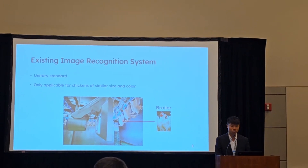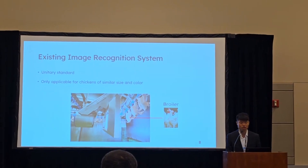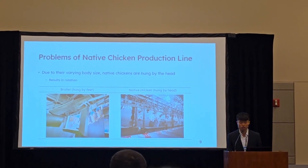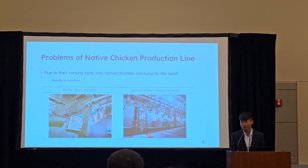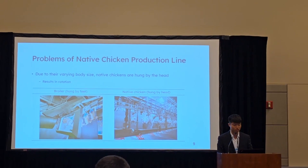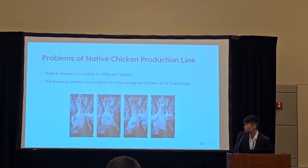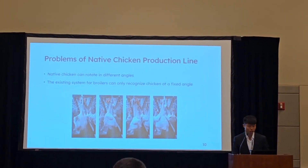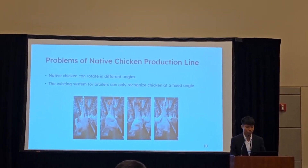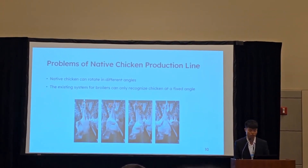However, the existing commercial grading system uses a unitary standard and was designed just for the broiler, which is similar in size and color. Due to the variety of body sizes of the native chicken, native chickens are hung by the head in the production line — different from the broiler, which is hung by the feet — and this causes a rotation problem. The native chicken can rotate at an arbitrary angle, but the existing system for the broiler can only recognize the chicken at the basic angle, so the existing system is not fit for native chicken.